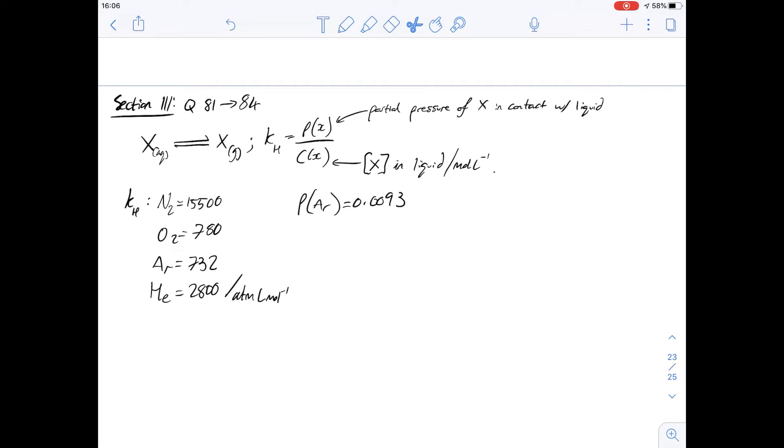Hi, I'm Carl, and in this video we're going to have a look at questions 81 to 84 of section 3 of the purple booklet. This is a question about Henry's constant, which looks at the partial pressure of a gas and how it dissolves in equilibrium as shown here.